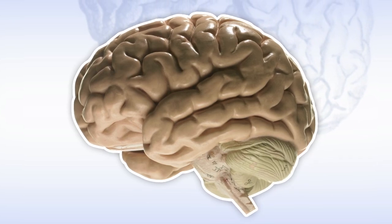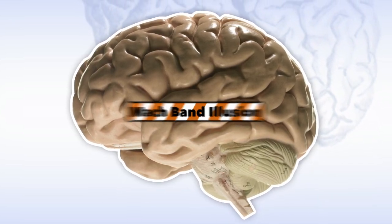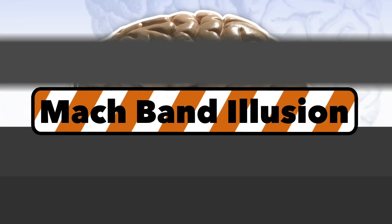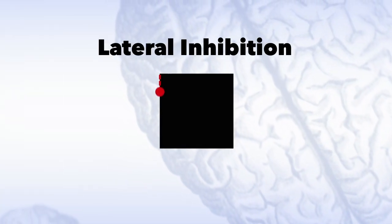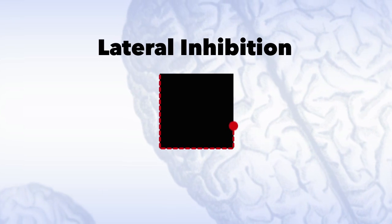Some can also trick our brains into perceiving colors or shades that aren't actually there. Take the mock band illusion. This stack of ascending gray bars seems to be lighter on the bottom, but when we separate them, we can see that they're all a solid color. This is due to an automatic process in our brains called lateral inhibition that helps us define the edges of objects.